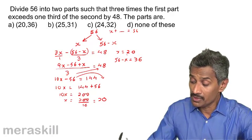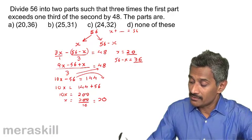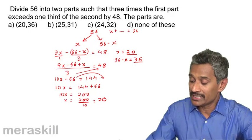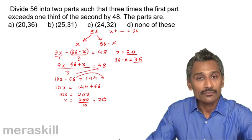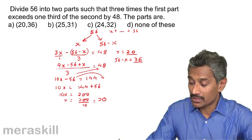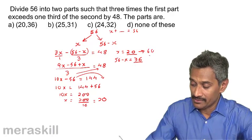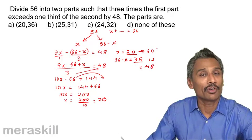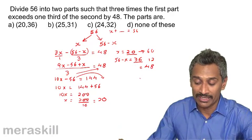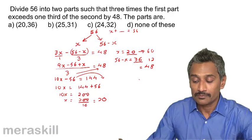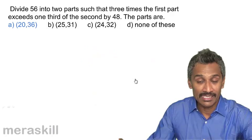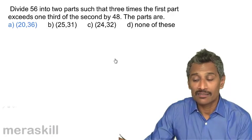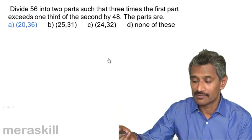The two parts are 20 and 36. Verification: 3 times 20 is 60; one-third of 36 is 12; 60 minus 12 is 48. The answer is confirmed as 20 and 36.